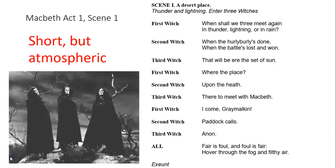So the opening to Macbeth is a really short scene but it's a very atmospheric and very effective scene. We've usually got all sorts of spooky noises going on. Of course we've got the witches who themselves are quite supernatural and scary. Shakespeare immediately tells us that there's thunder and lightning in the scene, and by opening with the witches in this short but very atmospheric scene he's creating an eerie, spooky atmosphere for the rest of the play.